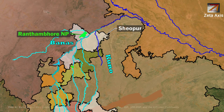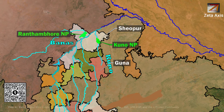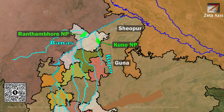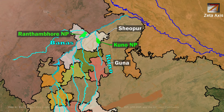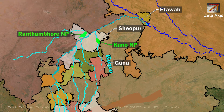The Kuno river originates in Guna and passes through Kuno National Park. The Chambal river then runs northeast forming the boundary between Rajasthan and Madhya Pradesh, then turns southeast forming the boundary between Madhya Pradesh and Uttar Pradesh, and finally joins the Yamuna river at Itawa.